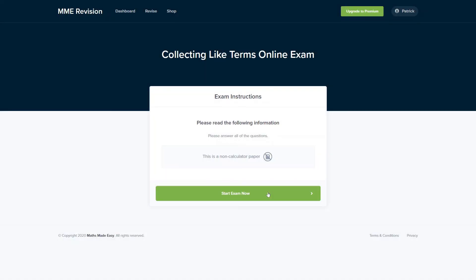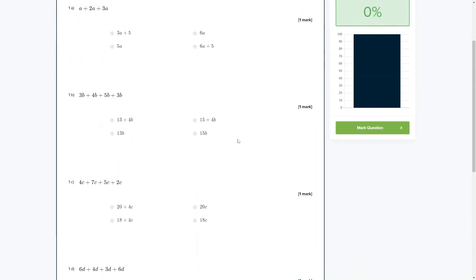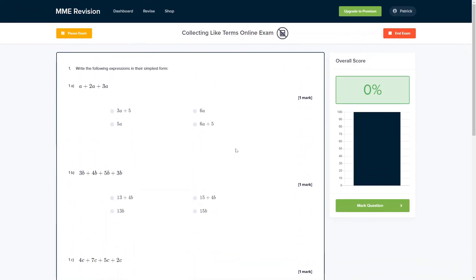Collecting like terms is a skill that's crucial to algebra so it's important that you get a lot of practice. You can do so with our online exam. This is available through our revision platform. If you take the test, you'll find loads of different questions to have a go at, and all of which are instantly marked. So this is a really good way of keeping track of your progress, finding out where you're going wrong and how you can improve. So if you're interested, you can click the link below and it will take you straight there.